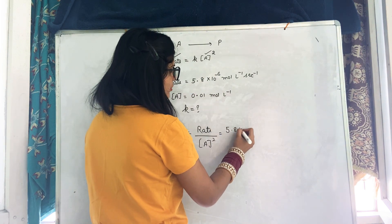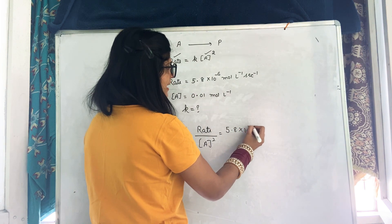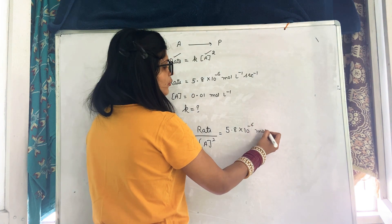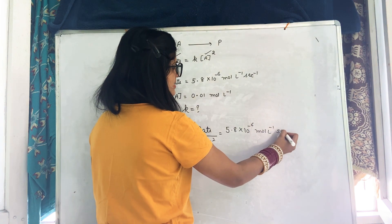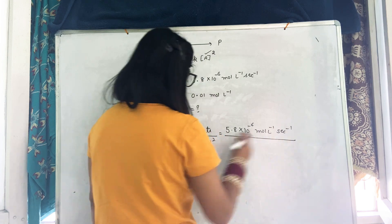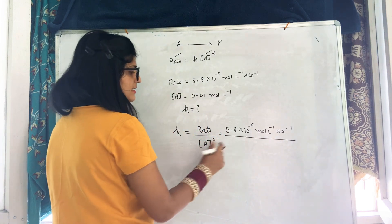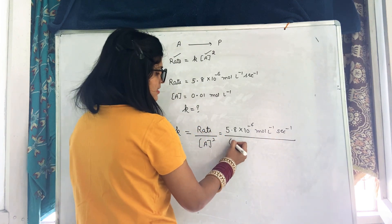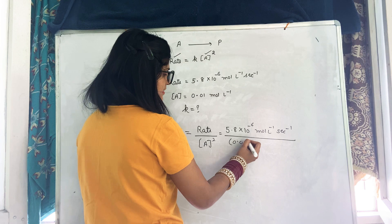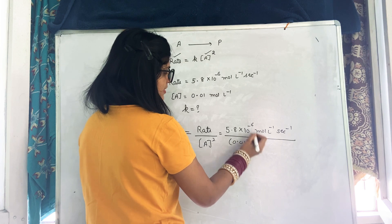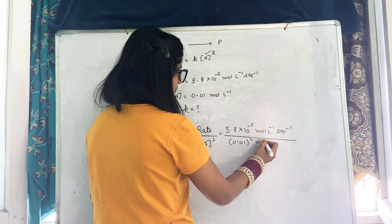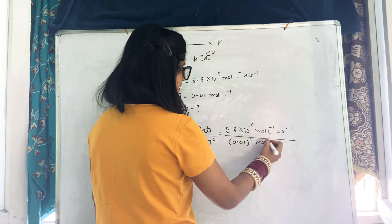k equals rate divided by [A] squared. Rate is 5.8 into 10 raised to minus 6 mole per liter per second, and A concentration is 0.01 mole per liter.